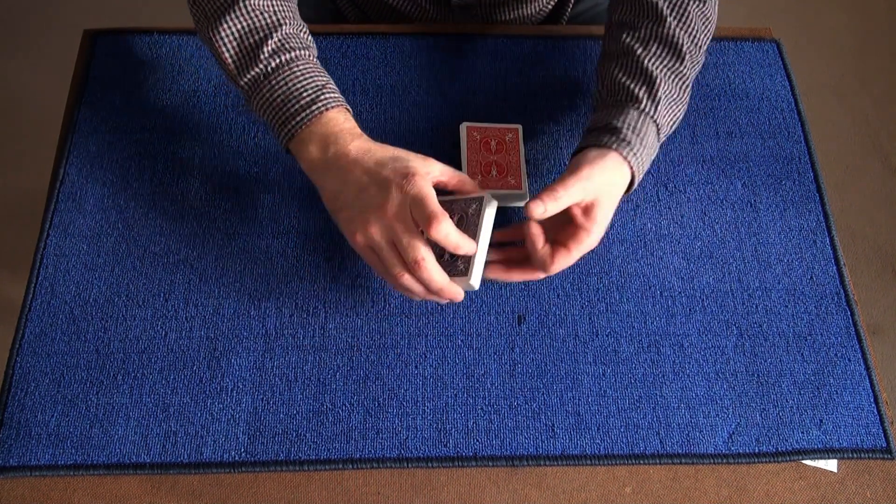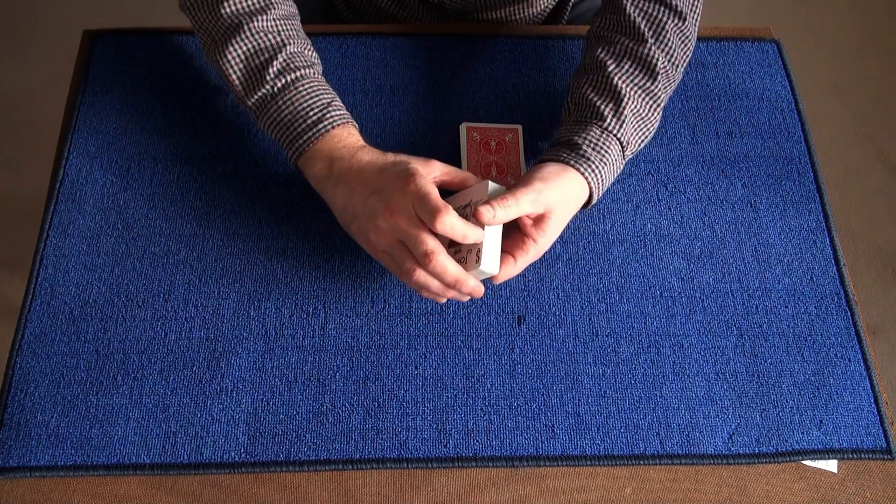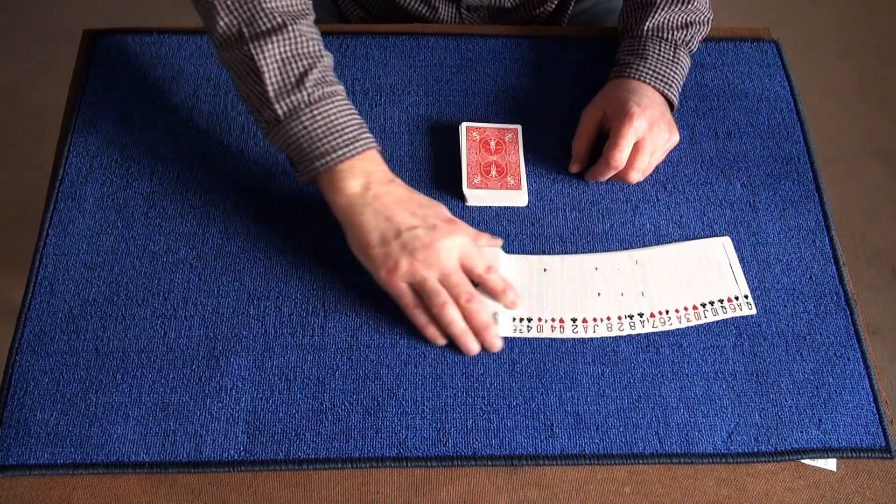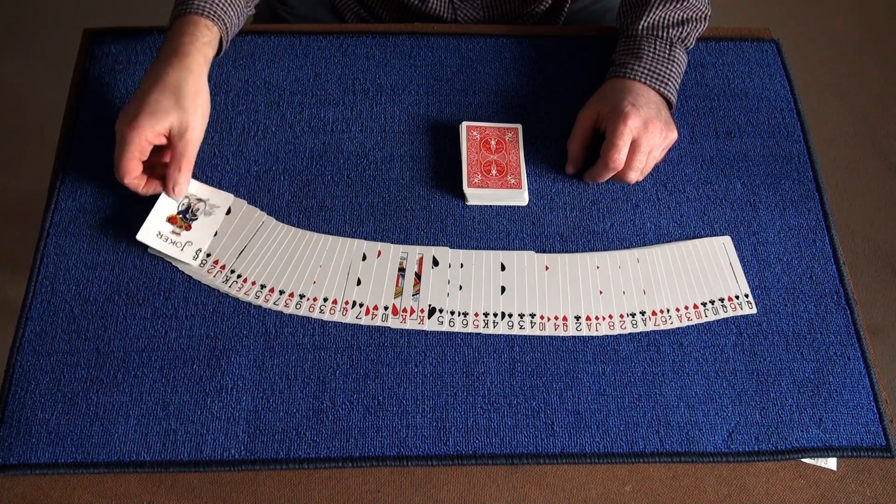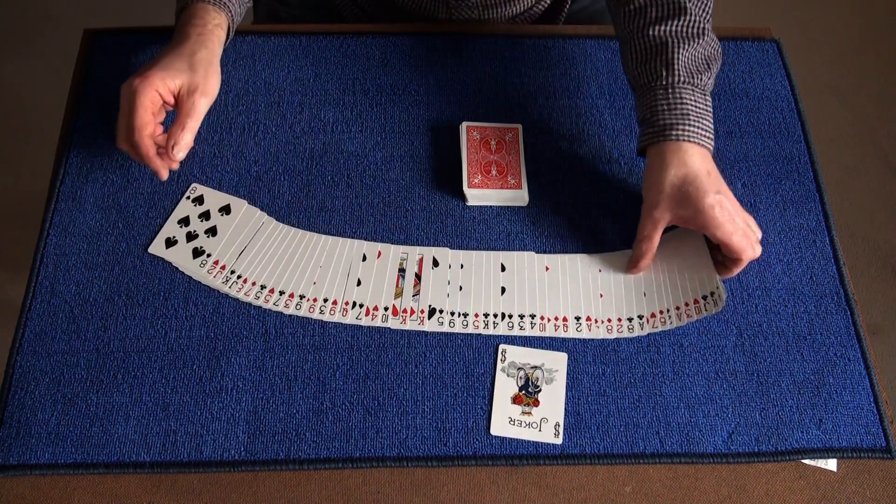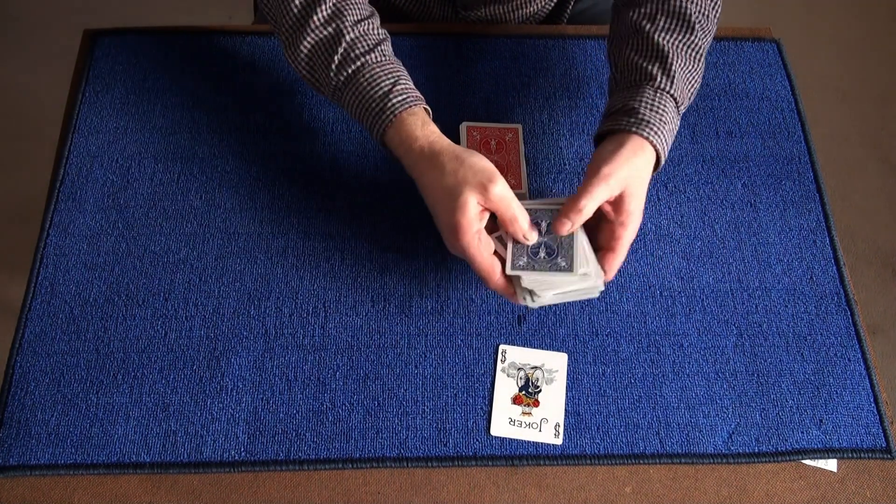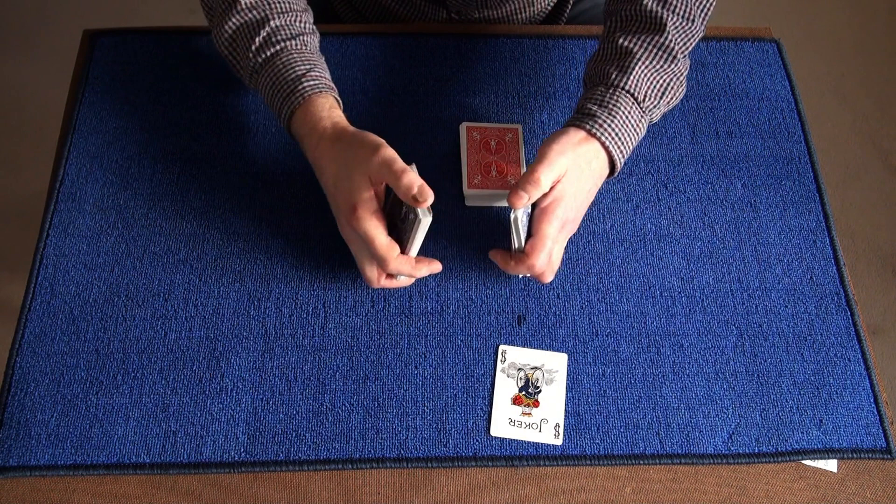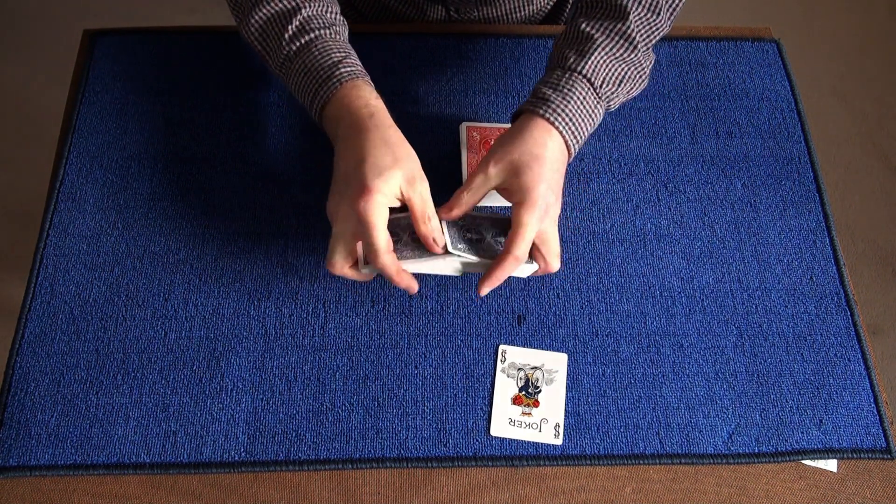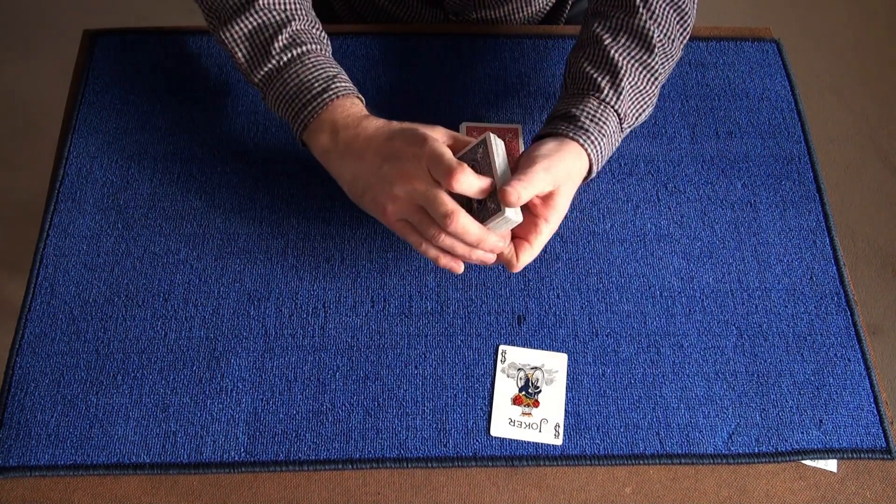I haven't got two spectators, so I'm just going to use this deck to create a random card. Show that the deck's nicely mixed up and in no particular order, and I'll remove this joker. We'll be needing that in a minute to create a random card. Let's just shuffle the deck, and we'll give it a cut.